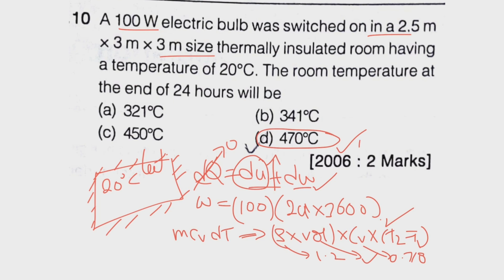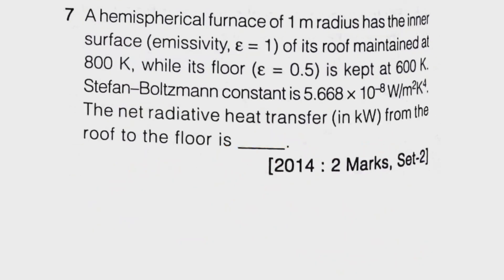More precisely, the answer is 465 degrees centigrade. Students often make the mistake of using Cp instead of Cv and end up with the wrong answer. You should not use Cp here. Since it is a thermally insulated closed room, you must use Cv only. Some people leave this question because they don't know the density of air — remember, the standard value is 1.2 kg/m³.